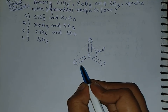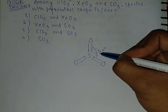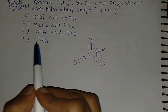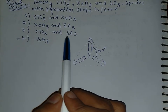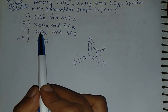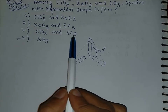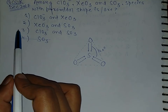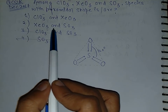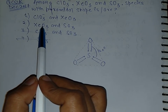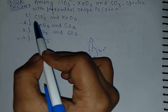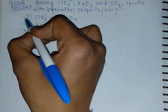Now we are asked to calculate the pyramidal shape. The fourth option is wrong. In the third option, SO3 is given, so we don't need to check the shape of chlorate ion — that option is wrong. In the second option, SO3 is again given, so we are not bothering about the shape of XeO3 either — that is also a wrong answer.